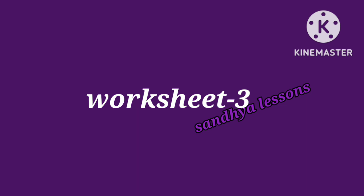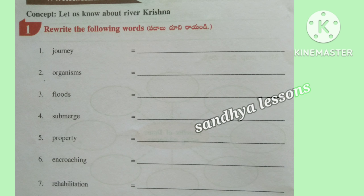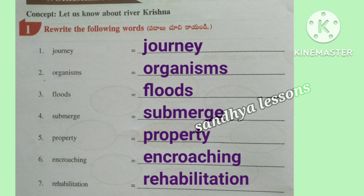Worksheet 3. First, rewrite the following words: Journey, Organisms, Floods, Submerge, Property, Encroaching, Rehabilitation.